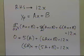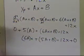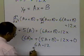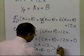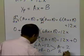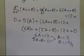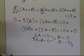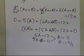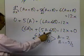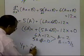Since a and b can be any numbers, the coefficients of x and the constant have to match the right-hand side. So 6a has to be 12, and 5a plus 6b has to be 0. This gives two equations, two unknowns: a is equal to 2, and b is equal to minus 5 thirds. So the particular part of the solution is 2x minus 5 thirds.